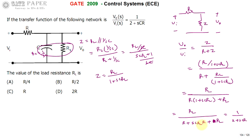The sCR term must be present, and the remaining terms form a separate constant. To match, take RL common from the denominator.